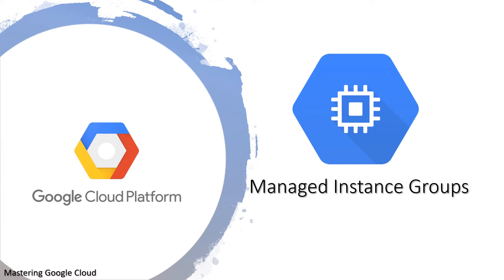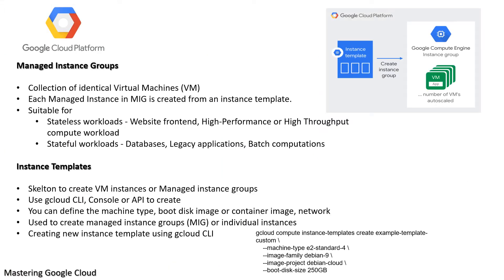Today we are discussing managed instance groups. A managed instance group is a collection of identical virtual machines that you can manage as a single entity. Each managed instance in a MIG is created from an instance template. They are suitable for stateless workloads like website front ends, stateless batch processing, high performance or high throughput compute processes such as image processing, or can be used for stateful applications like databases, legacy applications, and long running batch computations.